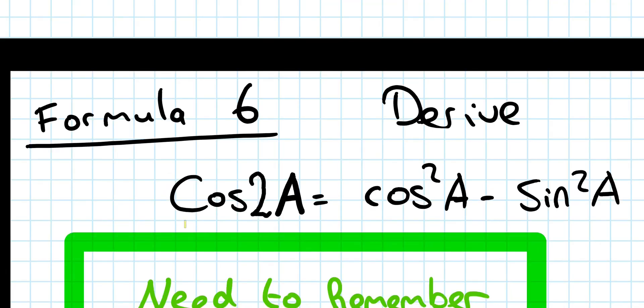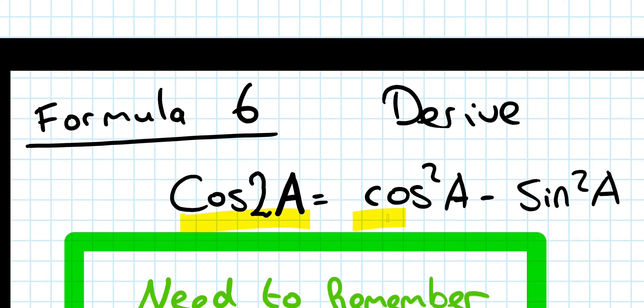We're looking at the proof that cos(2A) is equal to cos²A minus sin²A in this video. And it's a nice easy one as well, similar to the previous one.